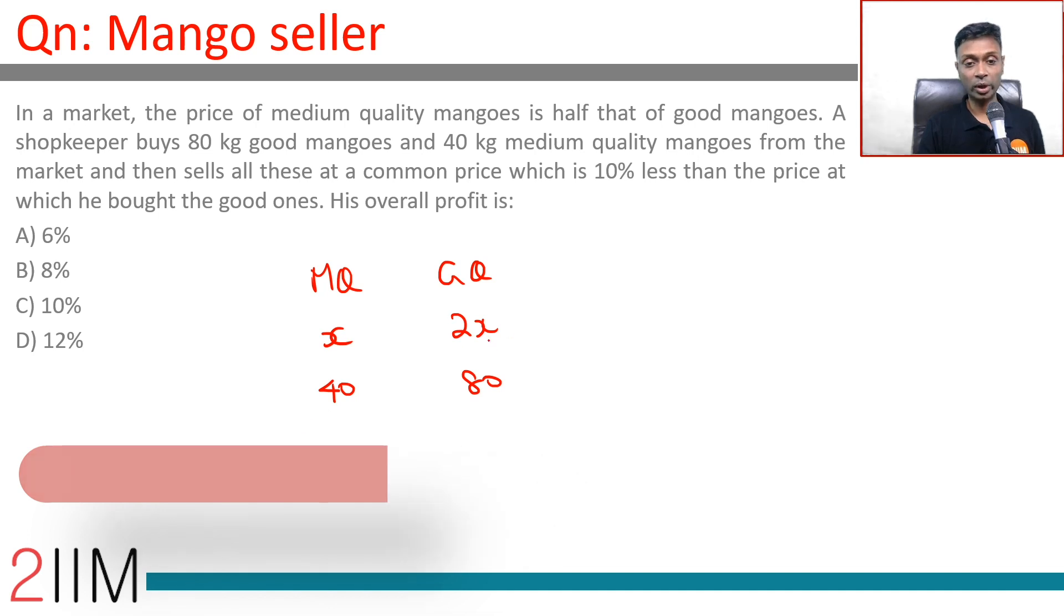Good quality costs 2x, and 10% less than that is 1.8x. His total cost price is 40x plus 160x, which equals 200x. His total selling price is 1.8x times 120, which equals 216x.